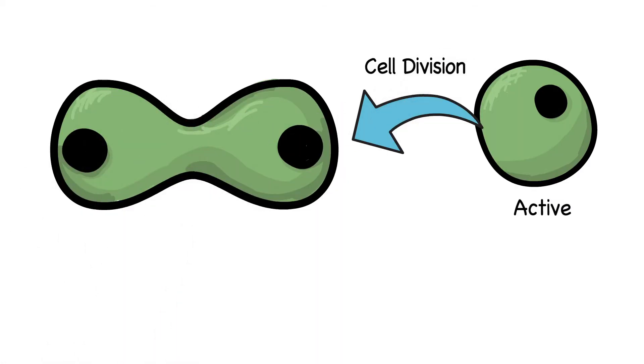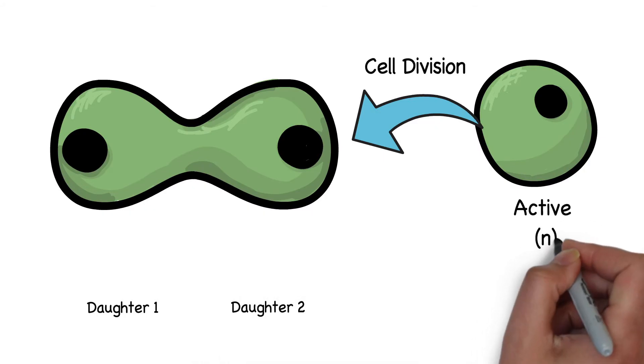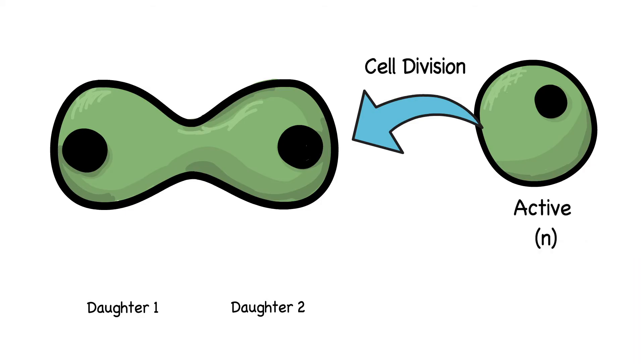These daughter cells, as we all know, must have equal and same number of chromosomes as the parent cell. For example, if the parent has N number of chromosomes, the daughter cells should also have N number of chromosomes.